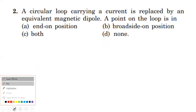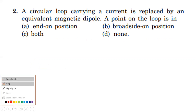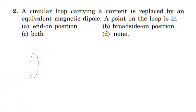Next question: a circular loop carrying a current is replaced by an equivalent magnetic dipole. A point on the loop is considered. This circular current-carrying loop is equivalent to a magnetic dipole, with one face north and one south. The magnetic poles connect along the axial line. Perpendicular to the axial line is the equatorial line. The point lies on the equatorial line, which is the broadside-on position.